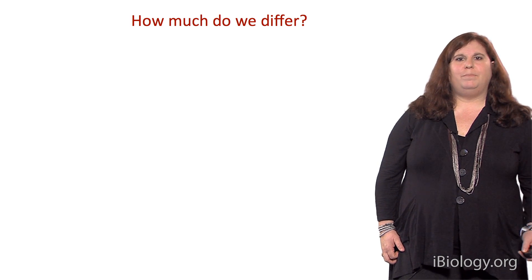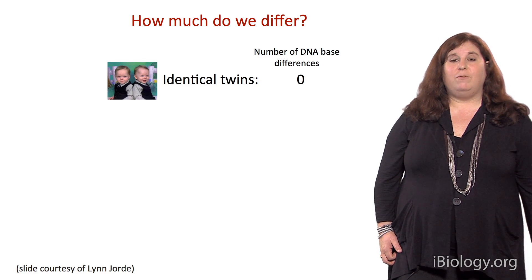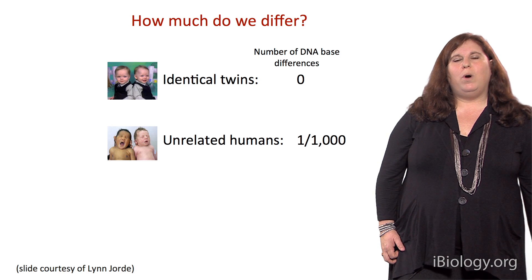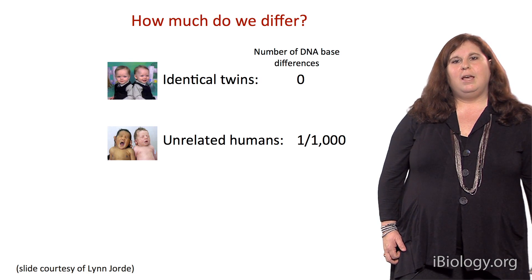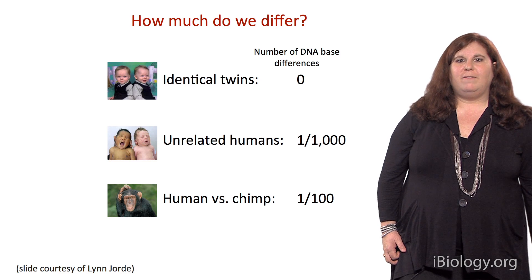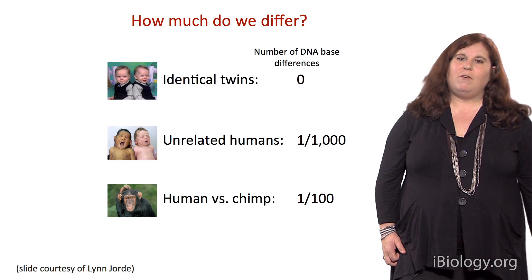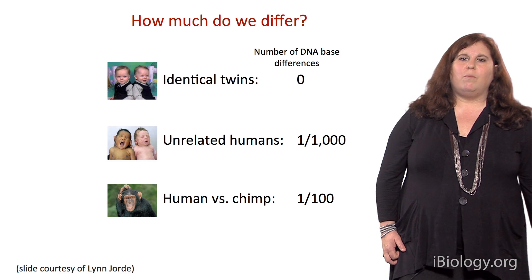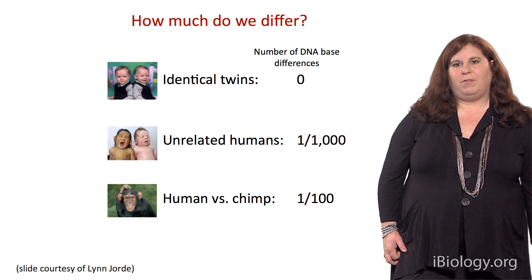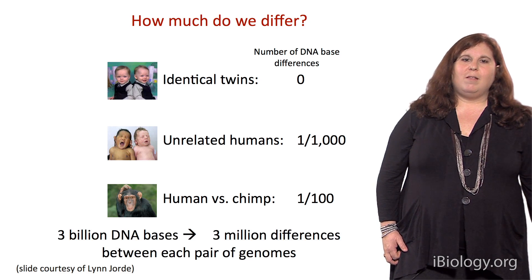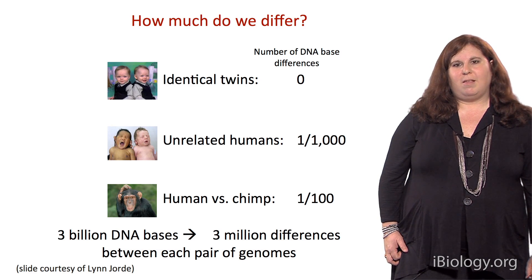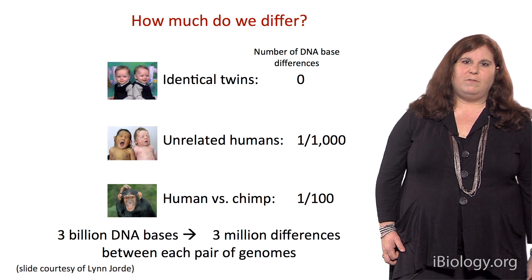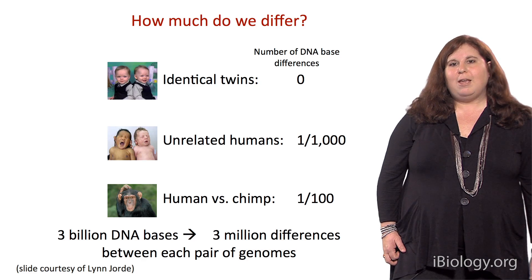The pattern of genomic variation in modern populations reflects our evolutionary and demographic history. How much do we differ? Identical twins have no differences at the nucleotide level. Unrelated humans differ at about 1 out of 1,000 nucleotide sites. Humans and chimpanzees differ at about 1 out of 100 sites. As a whole, our species is very similar, reflecting our recent common ancestry from Africa within the past 100,000 years. But with over 3 billion DNA bases in the genome, that results in 3 million differences between each pair of genomes — more than enough to make each of us unique.